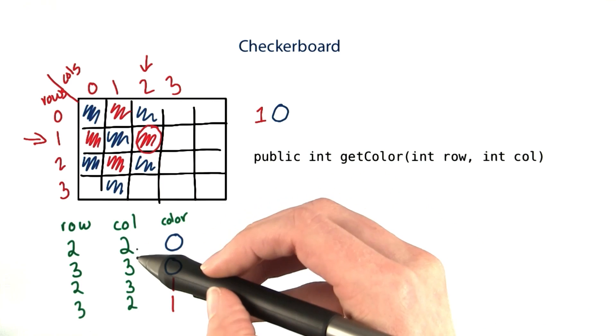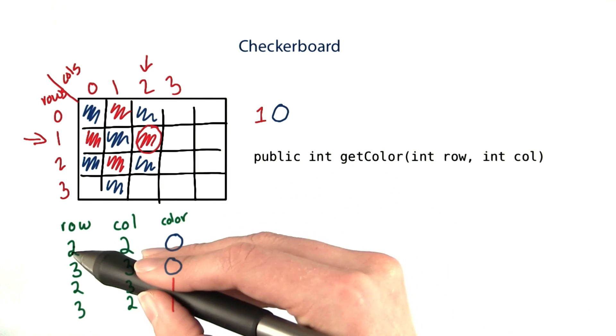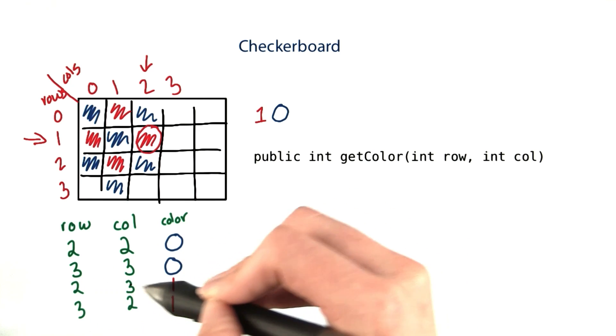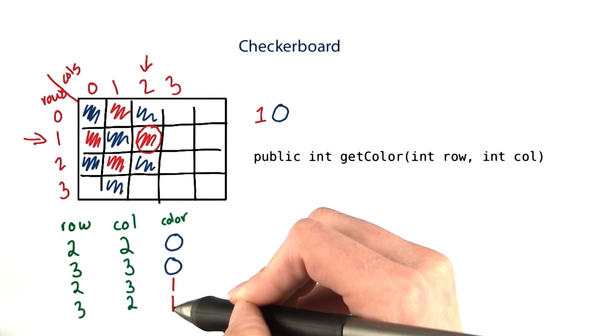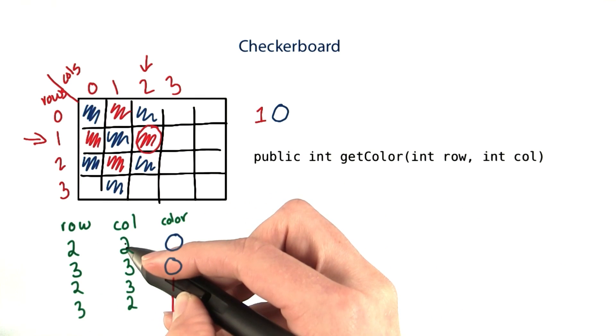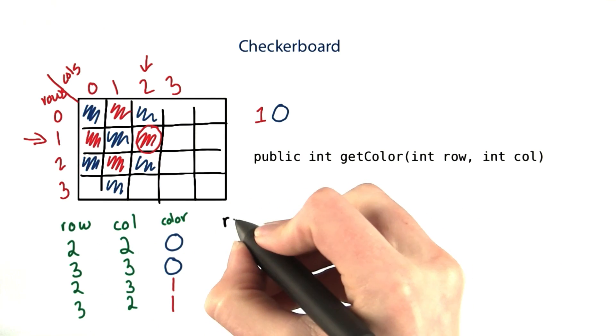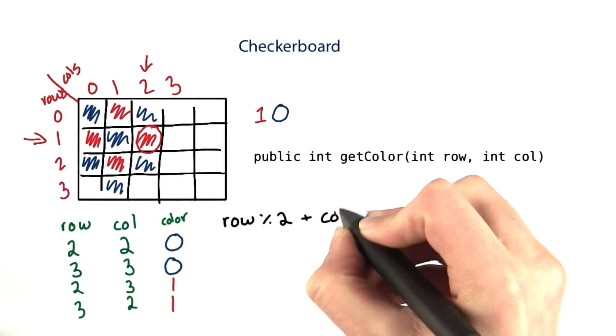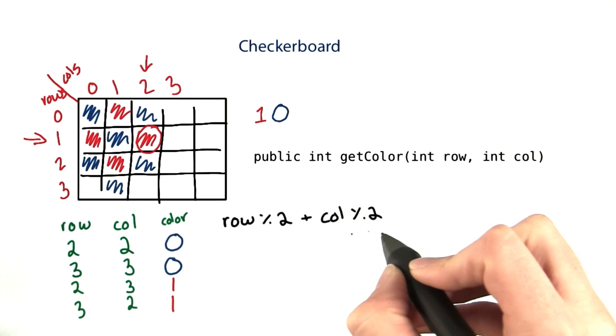So what's an expression I could try to use to turn 2 and 2 into 0, 3 and 3 into 0, 2 and 3 into 1, and 3 and 2 into 1? It kind of looks like maybe I'm taking the mod of these and adding that together. So row mod 2 plus column mod 2. Let's see what this gives in each case.